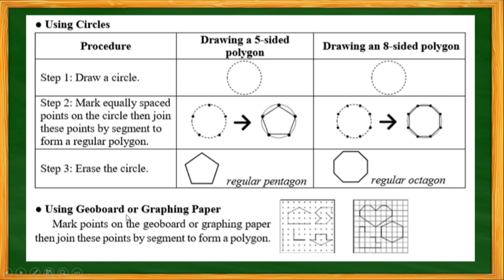Using a geoboard or graphing paper: mark points on the geoboard or graphing paper, then join the points by line segments to form the polygon — to make a regular or irregular polygon.